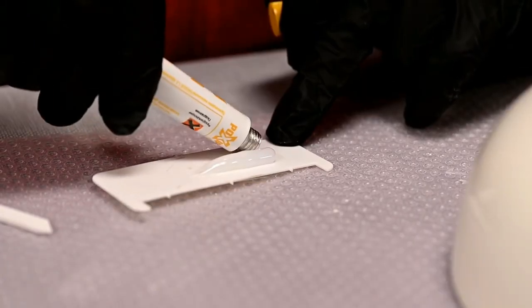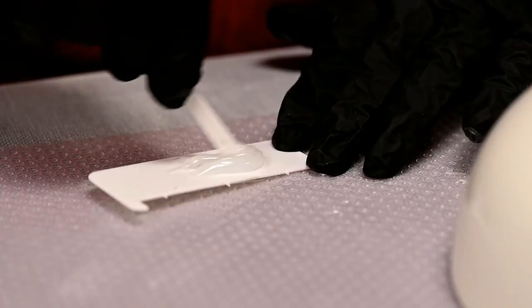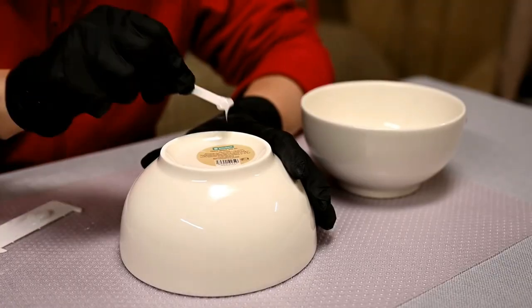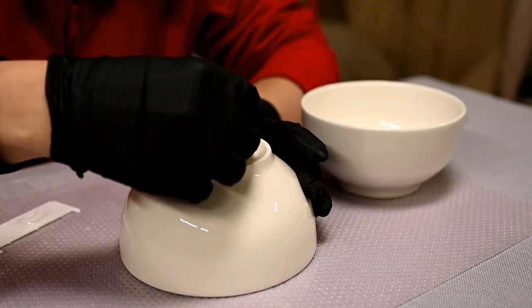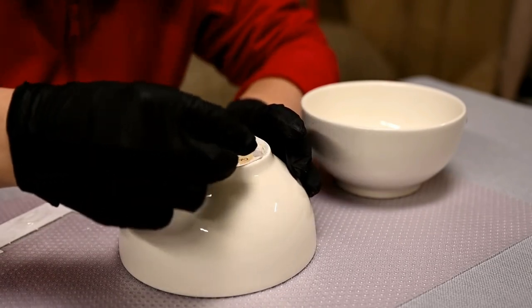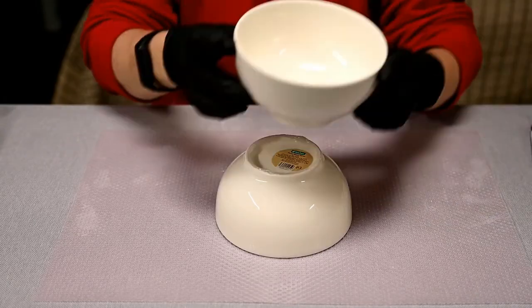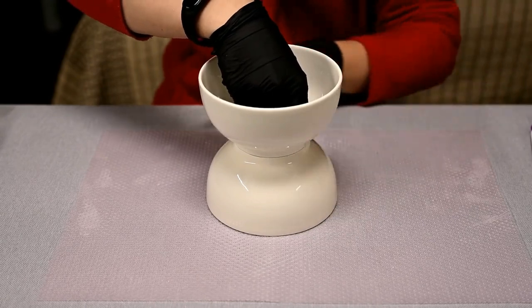I'm mixing equal amounts of cold welding glue components and applying the mixture onto the bottom of a bowl, and then I'm placing the second one on top.